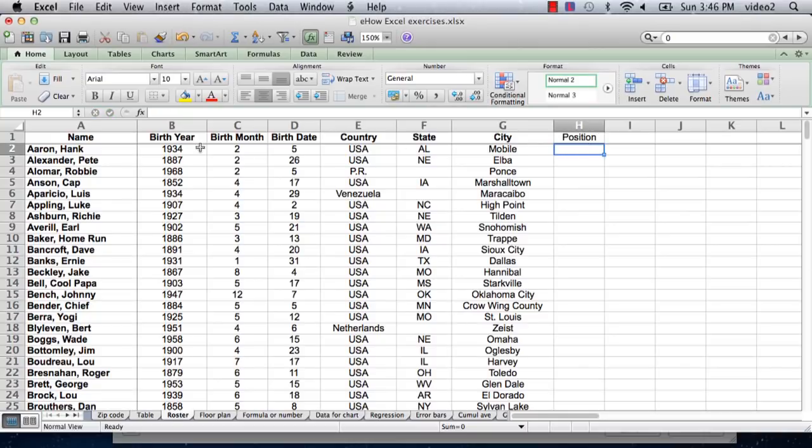Okay, and then we come down and start entering in information. So this guy was an outfielder, this guy was a pitcher, this guy was a second baseman. That's an old guy, I don't know who he was, and we just keep going like that.